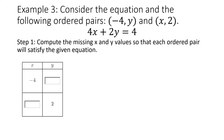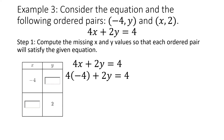Example 3: consider the equation and the following ordered pairs. We have negative 4 comma y and x comma 2, and the equation 4x plus 2y equals 4. Step 1: we're going to compute the missing x and y values so that each ordered pair will satisfy the given equation. Starting with the first ordered pair, negative 4 comma y — that negative 4 is my x, so I'm going to substitute in negative 4 for my x.